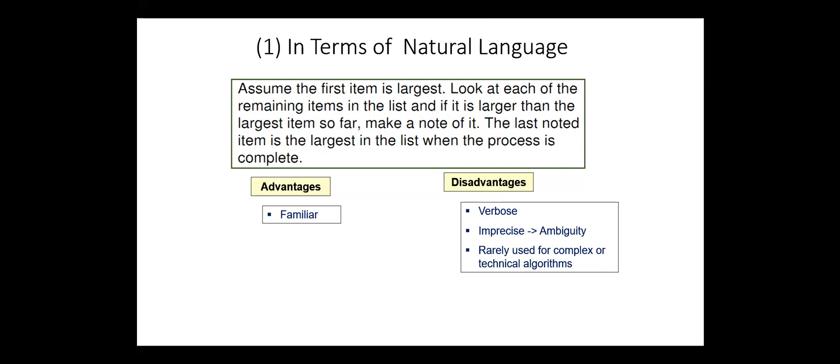The main advantage of this method is that it's familiar. However, it has several disadvantages: verbose, imprecise, which leads to ambiguity, and is rarely used for complex or technical algorithms. We use this method every day for describing our activities.